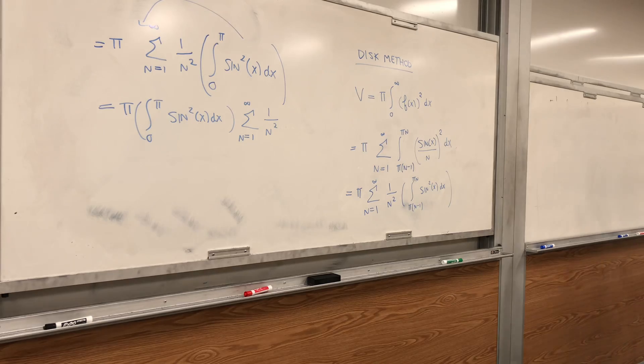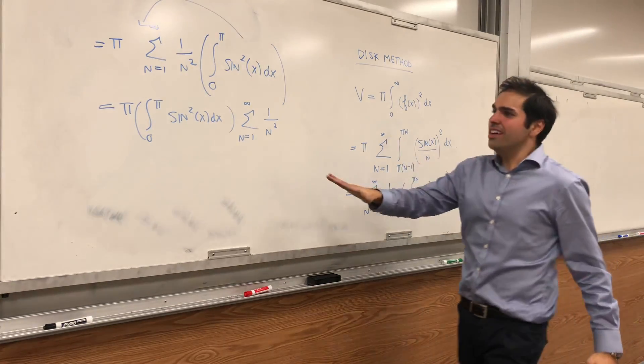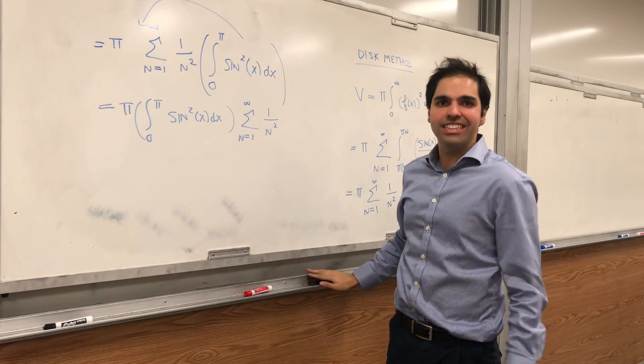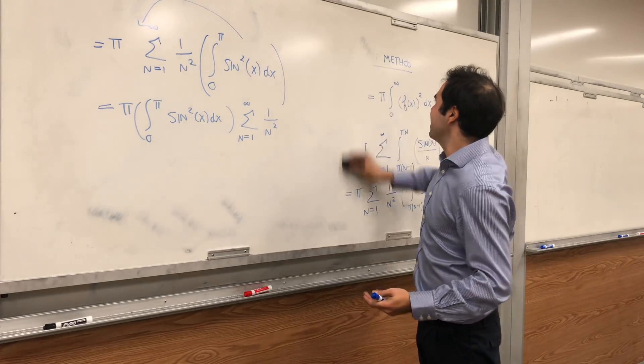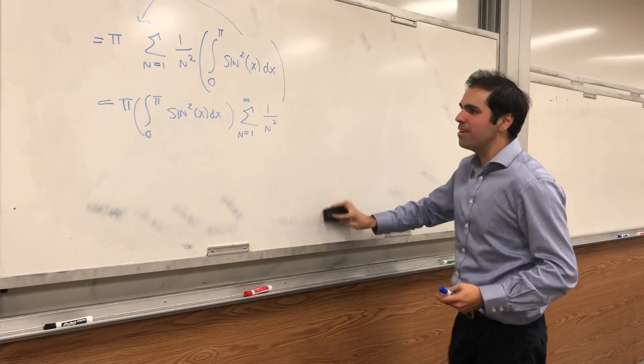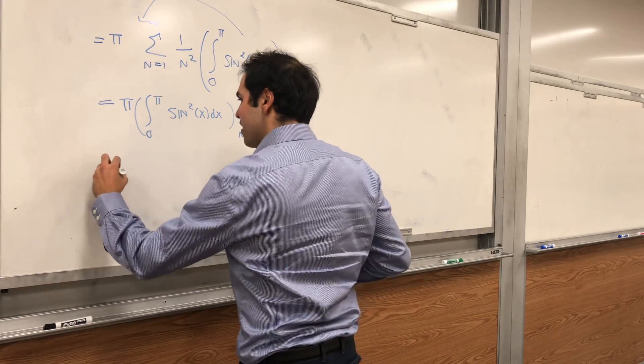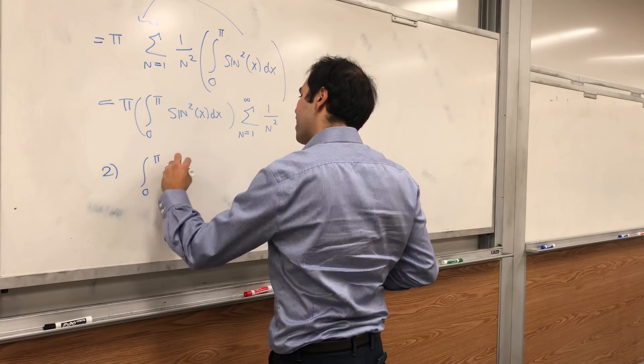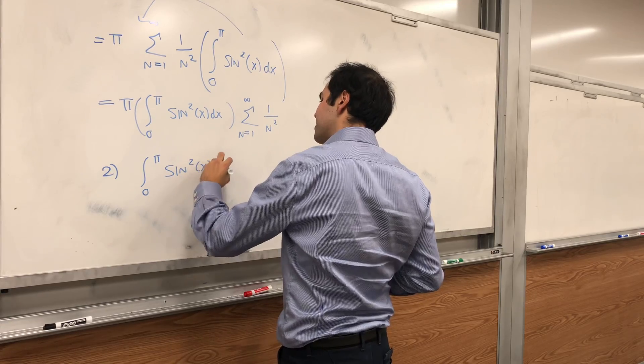So pi times the integral from 0 to pi sine squared of x dx times the sum from 1 to infinity of 1 over n squared. Now, I'll get back to this sum soon. Now let's actually evaluate this integral using some integration techniques. So I guess that was the first step. Now let's do the second step.